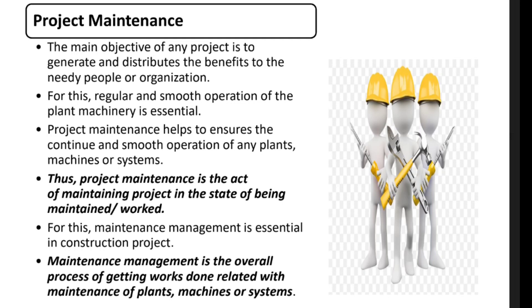The main objective of any project is to generate and distribute the benefit to the needy people or organization. Under this, the benefits and outputs are generated, and the organization distributes them to the people. For this, regular and smooth operation of the plant, machinery, and systems is important.